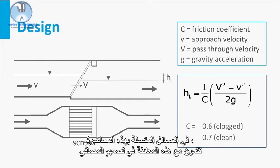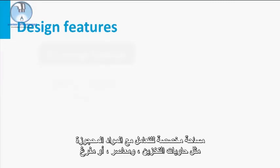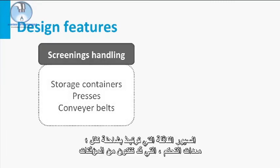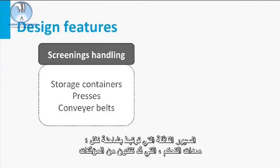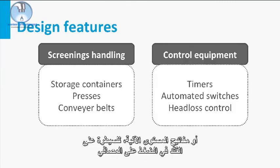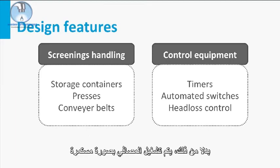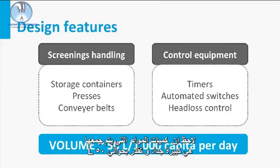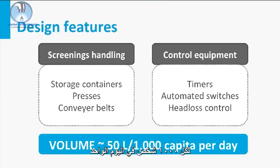In the questions related to this lecture, we will practice with this formula in the screen design. Other design features of a bar screen include provision for handling of the screenings, such as storage containers, presses or conveyor belts connected to truck transport, and control equipment consisting of timers or automated level switches controlling the head loss of the screen. Alternatively, the screens are operated as a continuous device. Note that the volumes of the collected screenings are quite considerable, amounting to about 50 liters per 1,000 persons per day.